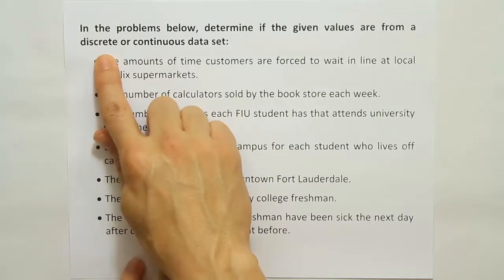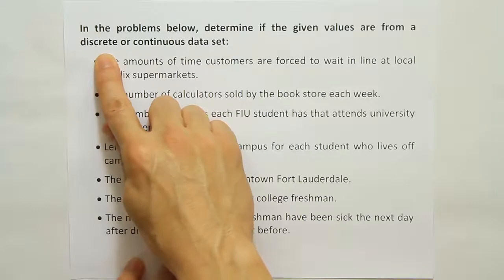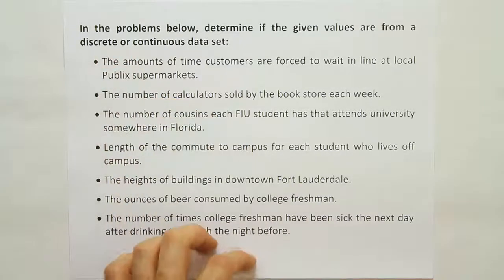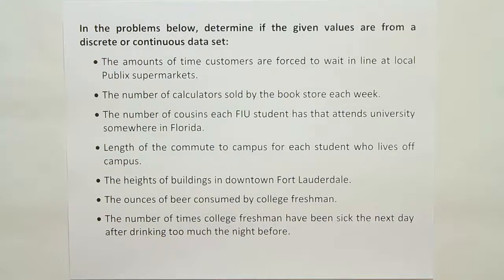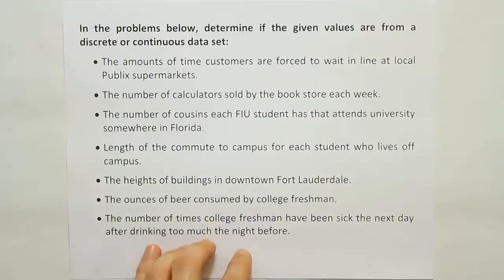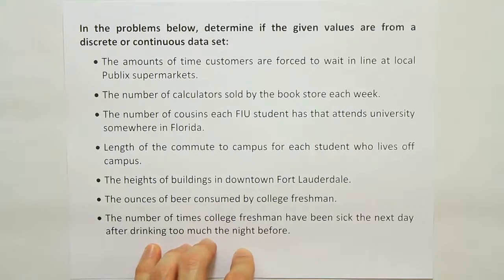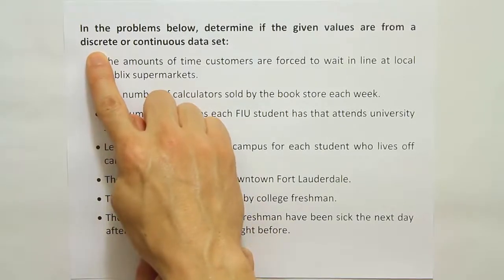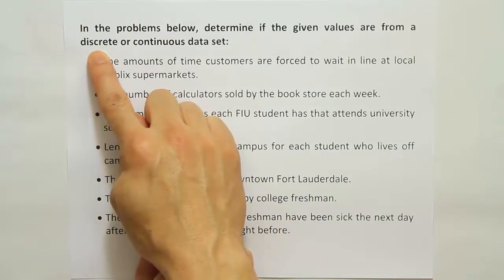A set of discrete numbers, by definition, have gaps between them. For example, if you said to someone, I'm going to bring one book to class today, you could also say I'm going to bring two books to class today. But you would notice that you can't say you're going to bring anything in between those two numbers — you can't say you're going to bring 1.8 books to class today. So when a number is discrete, you can't get values in between two values that are obtainable.